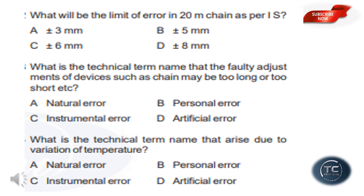What is the technical term for the error that is due to variation of temperature? Temperature variation is an error. The options are natural error, personal error, instrumental error, and artificial error. The answer is option A: natural error. Temperature variation is a natural error.